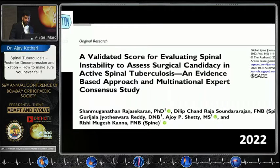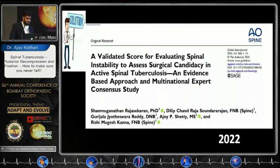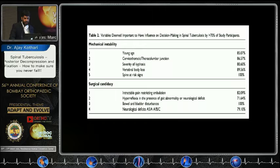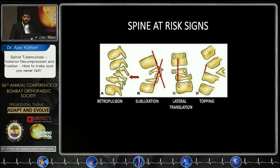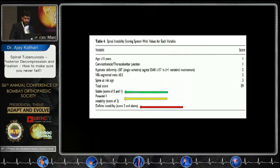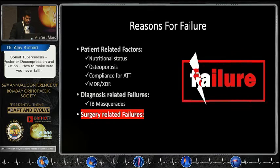Who are the right candidates to operate? This is addressed in a landmark paper by Professor Raj Shekran, validating a scoring system for spinal instability to assess surgical candidacy in active spinal TB. This evidence-based approach covers mechanical instability, surgical candidacy, and deformity calculation for thoracic vertebrae. We also need to keep the spinal instability neoplastic score — the SINS risk signs — in mind when planning for deformity and spinal failures.